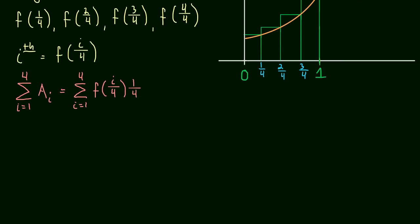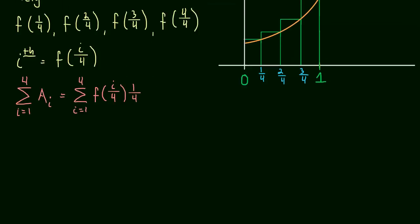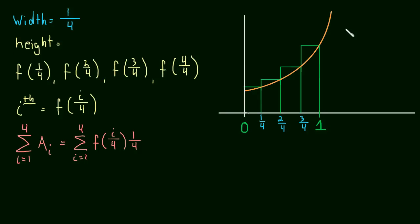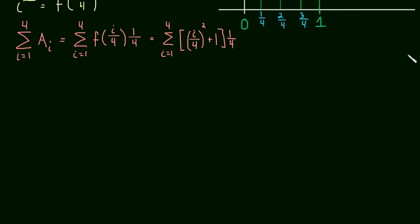The rest is just the algebra of sums. Let's say the function is x squared plus one. Now we can plug i over four into x squared plus one. So this is the sum as i goes from one to four of i over four squared, plus one, times the width one over four. This is still height times width, where the height is the f of x value.